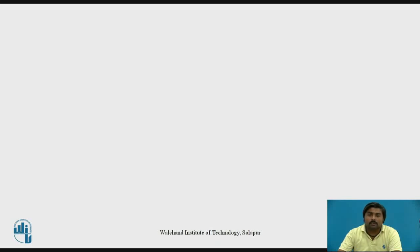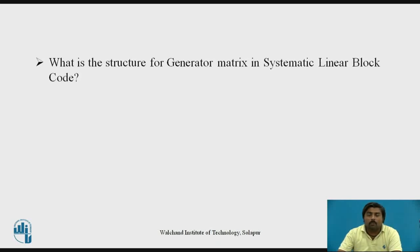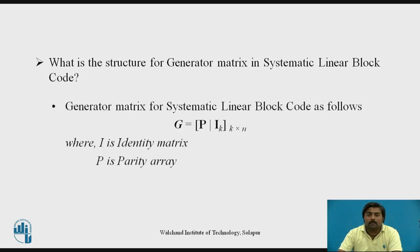Before starting with the actual session, let's pause the video and think about what is the structure for the generator matrix in systematic linear block code. If you remember, the generator matrix is formed as a combination of the parity array P and the identity matrix I of size K×K. So the total size of the generator matrix is K rows and N columns.